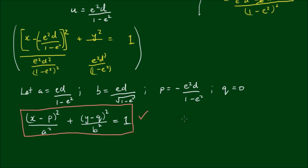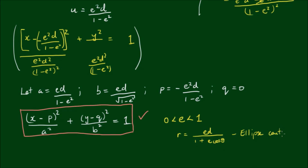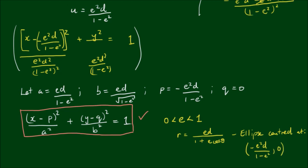This is assuming that the eccentricity E is a number between 0 and 1. So the polar form R = ED/(1 + Ecosθ) represents an ellipse centred at (−e²D/(1 − e²), 0).